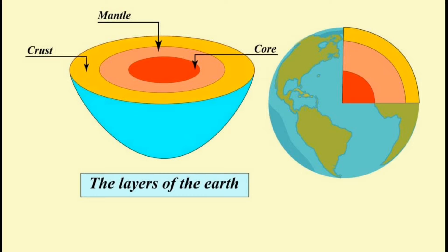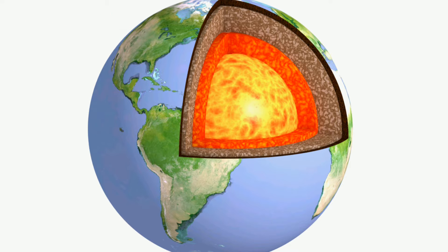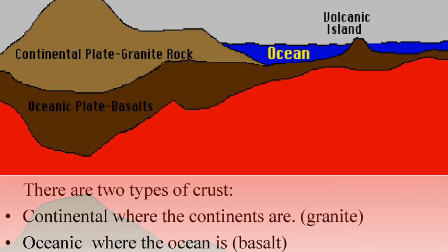The Earth has been divided into three main layers. The first layer is the crust, the middle layer is the mantle, and the last layer is the core. The crust is the outermost layer of the Earth and we live on it. The Earth's crust is like the skin of an apple — very thin in comparison to the other layers. It is only about 8 km thick under the oceans and about 32 km thick under the continents.